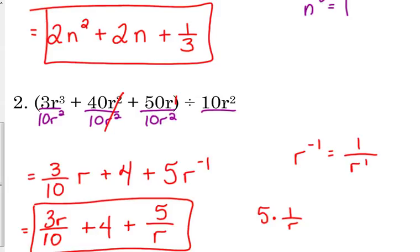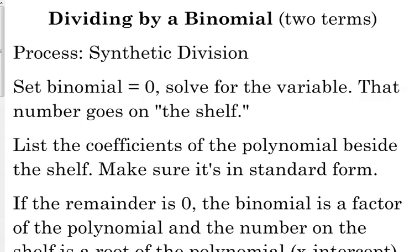So let's just practice with that concept of binomial. A binomial meaning it has two terms, x plus 3, 5x minus 2, stuff like that. That's a binomial, two terms, bicycle, two wheels, binomial, two terms. We use a process called synthetic division.